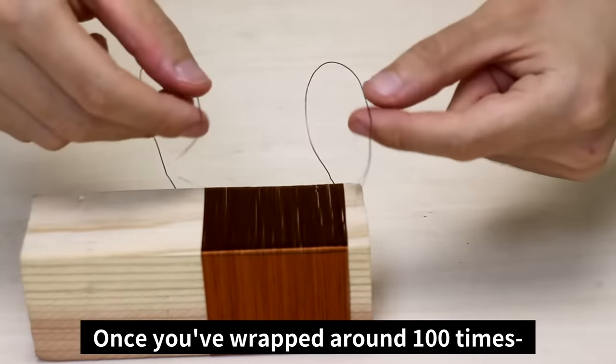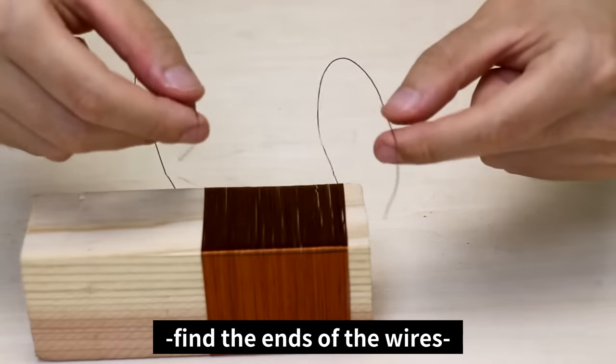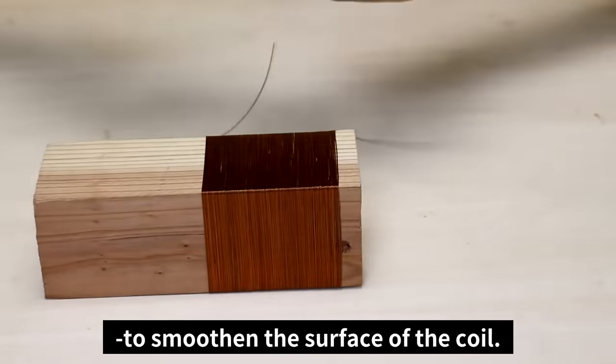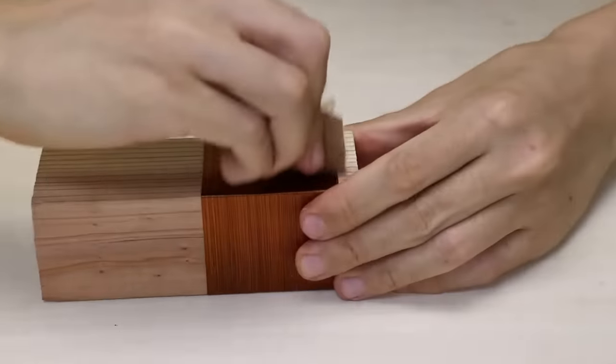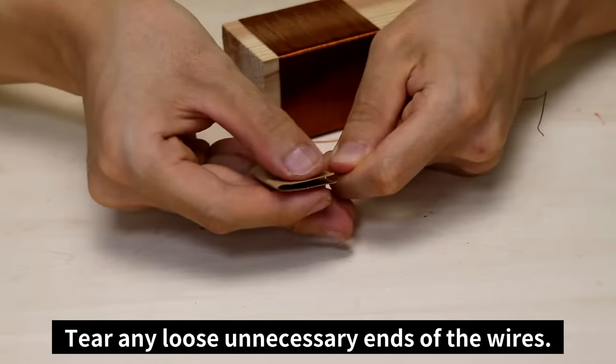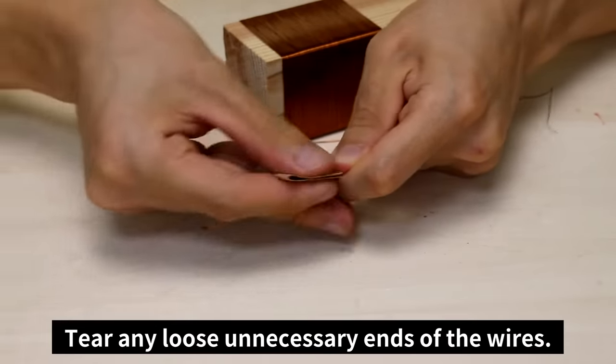Once you've wrapped around 100 times, find the ends of the wires and use some sandpaper to smoothen the surface of the coil. Tear any loose, unnecessary ends of the wires.